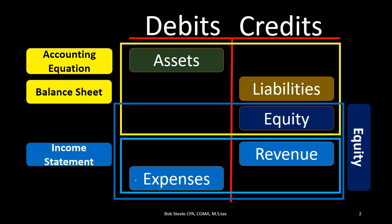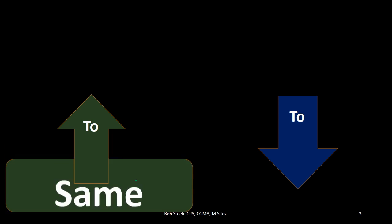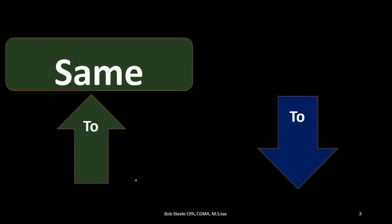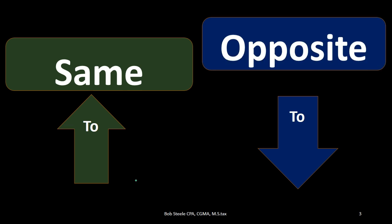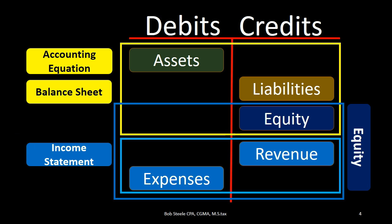Once we know the normal balances, we can apply the one rule to make these accounts go up and down. The rule is: if we want to make an account go up, we do the same thing to it as what it is. If we want to make an account go down, we do the opposite thing to it. This rule can seem abstract at first, so let's walk through some examples starting with the asset accounts.